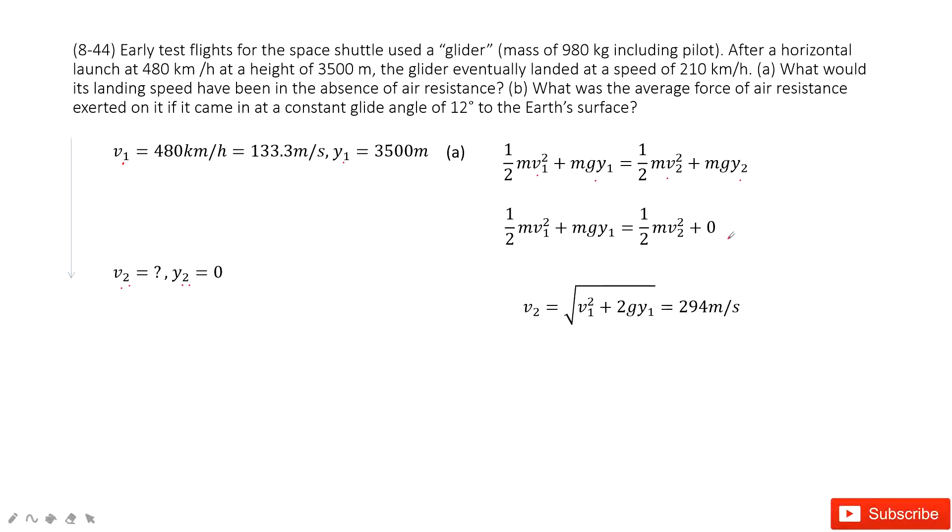And then we can input y2 equals 0 inside. And then we can solve the value very easily in this equation: 294 meter per second.